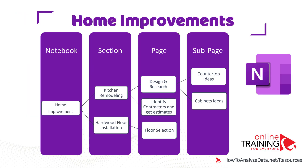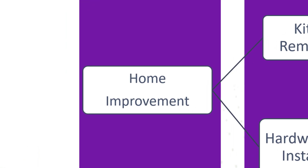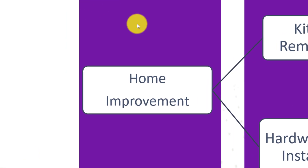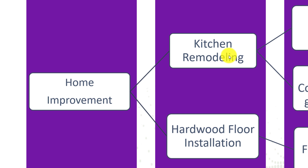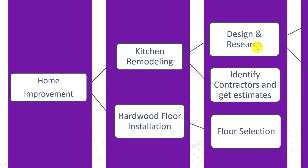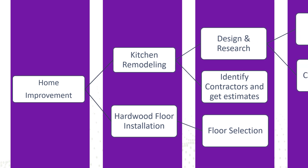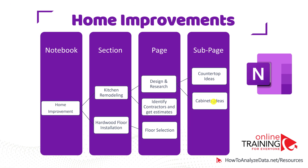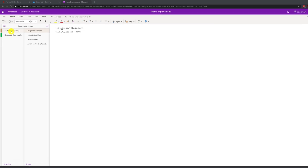Let's look at some ideas of how you can consider organizing the data. This is the structure of the home improvement notebook in OneNote. The notebook is named Home Improvements and has two sections: kitchen remodeling and hardwood floor installation. Kitchen remodeling has two pages — design and research, and identify contractors and get estimates. In design and research, there are two subpages: countertop ideas and cabinet ideas. Once you design the structure, it is very easy to implement in OneNote.